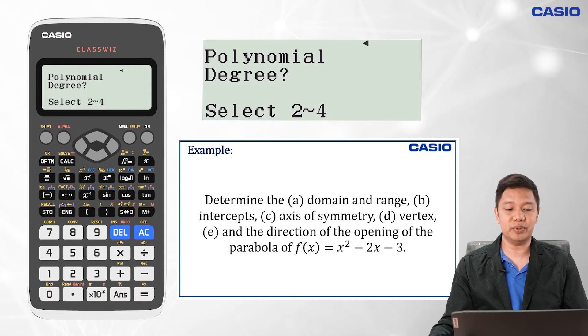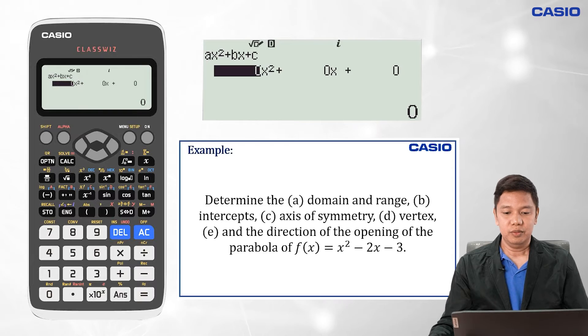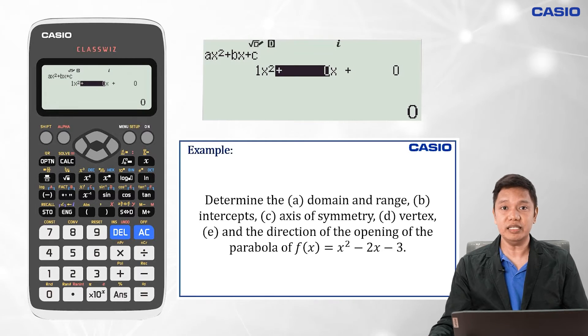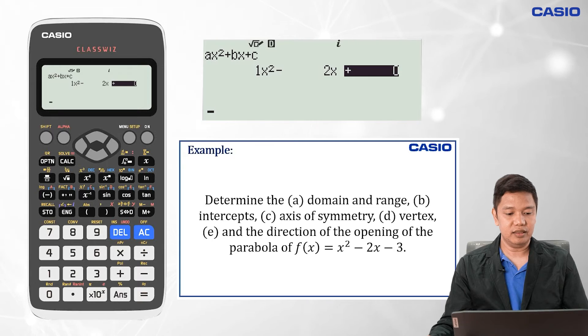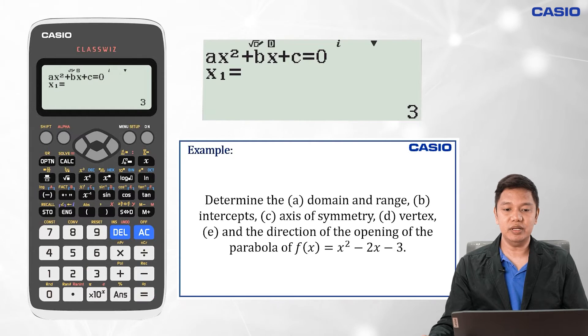We need to input the numerical coefficients a, b, and c. In this case, a equals 1, so press 1 then equals. b is negative 2, so press negative then 2 then equals. c is negative 3, so press negative then 3 then equals. Pressing equals again, we have the x-intercept 3, and pressing equals again, the other x-intercept is negative 1.